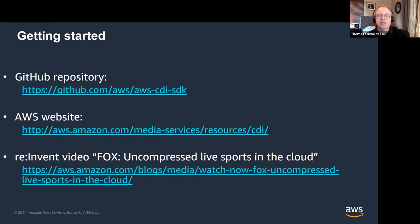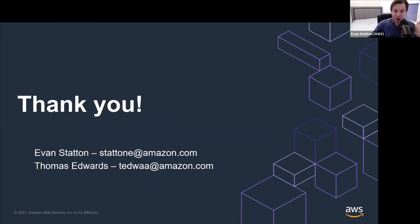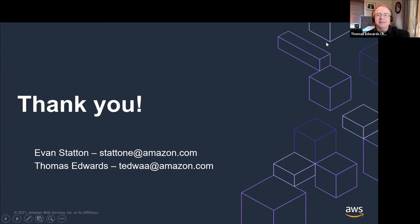To get started, you can go to the GitHub page and look at the CDI SDK. There's also more explanation about what CDI is on the AWS website. If you'd like to see how an actual customer is using this, you can watch the AWS re:Invent 2020 video about Fox's uncompressed live sports in the cloud. The important thing is that there's a customer talking about it. As I've been taught, 90% of all new features in AWS come from customer requests — we're highly customer obsessed.